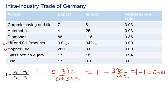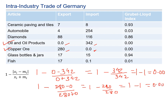For copper ore: Germany is only exporting and not importing, so the answer is again 0. Applying the formula: 1 − |280 − 0| / (280 + 0) = 1 − 280/280 = 1 − 1 = 0. This confirms that when a country only exports or only imports a particular product, the Grubel-Lloyd Index equals 0.